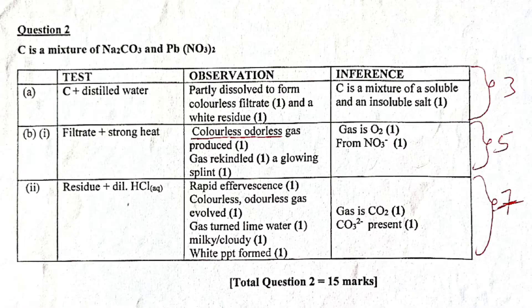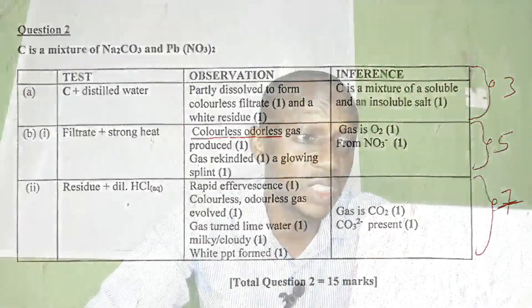Now, once you score the two marks in the observation, you are now eligible to score the mark for inference. If you didn't score the mark for observation, no mark for inference. So inference, C is a mixture of a soluble and insoluble salt. It means part of them are soluble and the other one are not soluble. So for that column, we have 3 marks for the column. So let's go to question B. Roman 1.